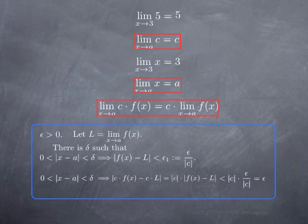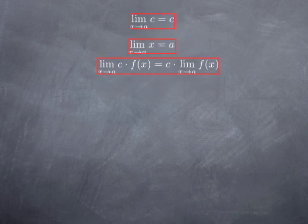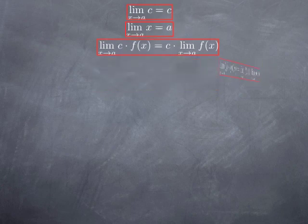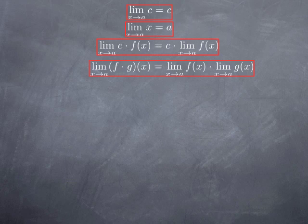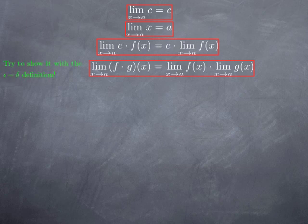In other words, for a fixed epsilon, we found the delta for which, whenever the distance between x and a is nonzero but less than delta, the distance between c times f(x) and c times l is less than epsilon. More generally, if I have two functions f and g that both admit a limit at a, then the product function f times g also has a limit at a, and to obtain this limit, you simply multiply the limits of the two functions. This would be a good exercise to try to mimic what we've done to prove this more complicated case.